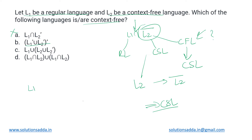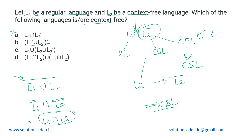Option B is L1 complement union L2 complement, all complemented. We can simplify this using De Morgan's law: the outer complementation is removed and applied to both, and union turns into intersection. This simplifies to L1 intersection L2. We know L1 is regular and L2 is a CFL, and the intersection of a regular language and a CFL results in a CFL. So option B is a context-free language.